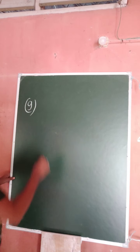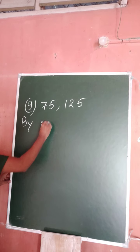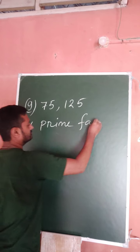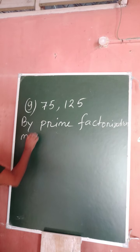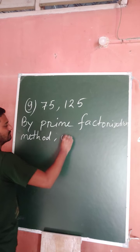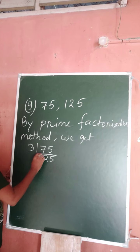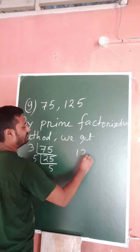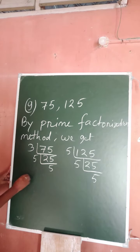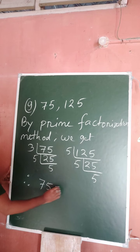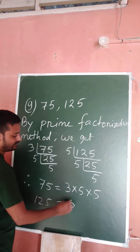Question number Z is: find the HCF of 75 and 125. By prime factorization method, 75 divided by 3 becomes 25. For 125, divide by 5 becomes 25, again divided by 5 becomes 5. So 75 equals 3 × 5 × 5, and 125 equals 5 × 5 × 5.